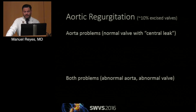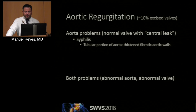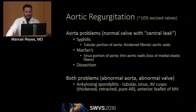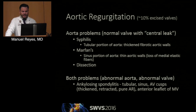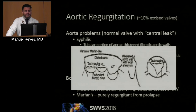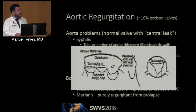Looking at aortic problems, this involves a generally normal valve with a central leak. You can see it with syphilis — a tubular portion of the aorta with a thick, fibrotic aortic wall. And Marfan's as well, which Dr. Ramshadani will discuss more. And then dissections. You can also have problems with both the valve and the aorta. Ankylosing spondylitis involves not just the tubular part of the aorta and the sinuses, but also the aortic valve cusps, leading to thickened, retracted, and pure aortic regurgitation. Marfan's can cause a purely regurgitant lesion based on a significant floppy cusp from the weakened aortic wall and aneurysmal dilation.